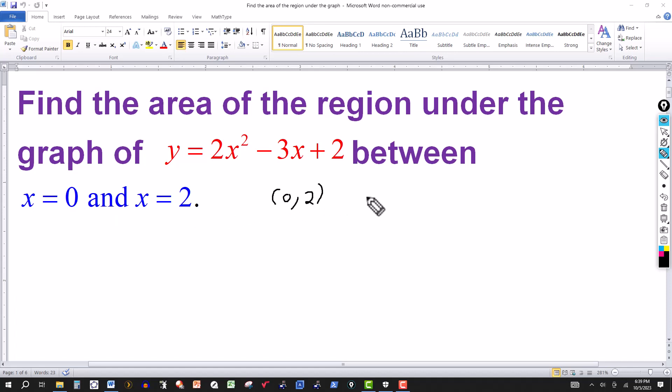If we plug in 2, 2 squared is 4 times 2 is 8, and 2 times -3 is -6 gives me 2, then plus 2 gives me 4. So at the start it goes from 0 to 2, and at the end of the interval it goes from 2 to 4.